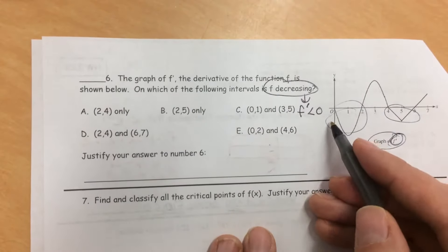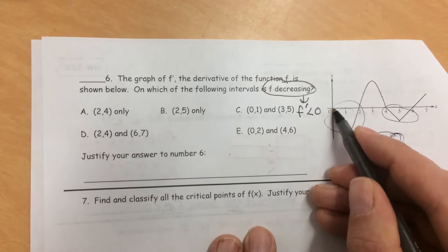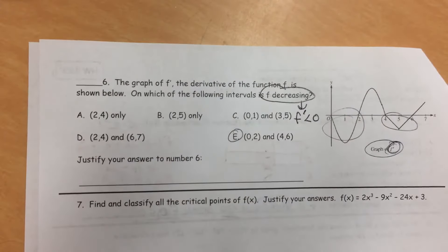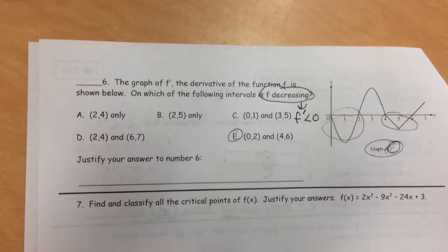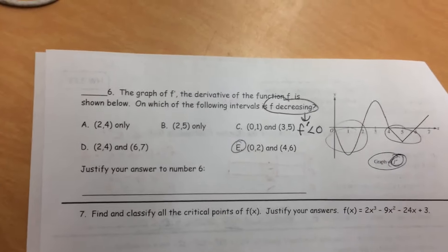So there we go. We're done. f is decreasing between x is 0 and x is 2 and then again between x is 4 and x is 6. Super easy. And I hope you guys can see that if you get good at these, these questions are very easy to get on the AP exam but are worth a ton of points. So this is something you want to get really good at and stay good at. I would practice this every couple weeks.